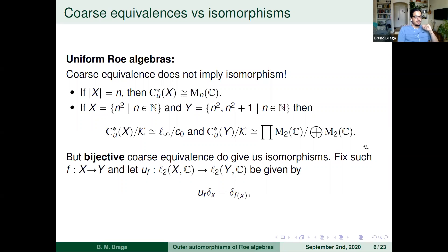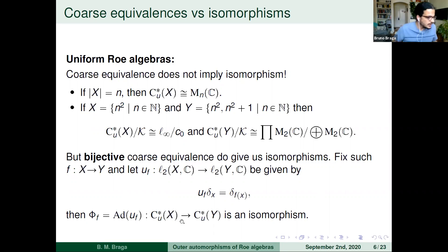However, if the coarse equivalence is actually a bijection, everything works. Given a bijective coarse equivalence f, you define an isometry of the two Hilbert spaces by sending basis elements δ_x to δ_{f(x)}. Since f is coarse, conjugation by this isometry gives an isomorphism between the uniform Roe algebras. This construction is canonical and will be used repeatedly.